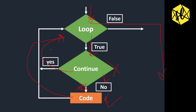So summarizing: the continue statement is used to skip certain code under a specific condition. For example, if we have a condition printing 1 to 5 and we say that if i equals 3 then continue, the program will check whenever i becomes 3, skip all code below the continue statement, and go back to the iteration part of the loop.